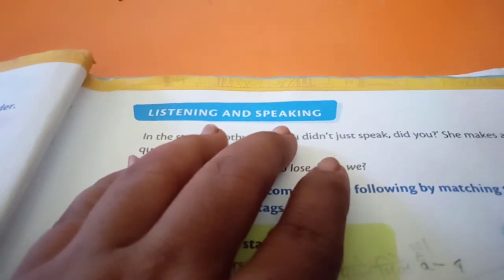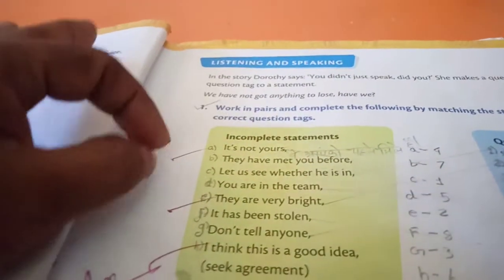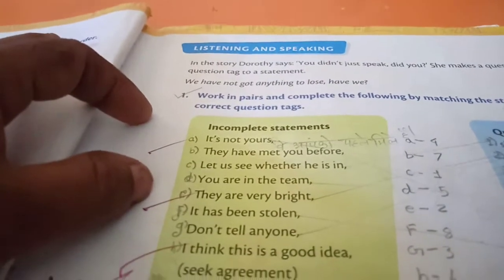Now here, page number 17, listening and speaking. This is also lesson number 1, Dorothy meets a scarecrow.